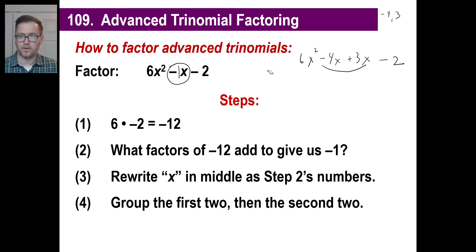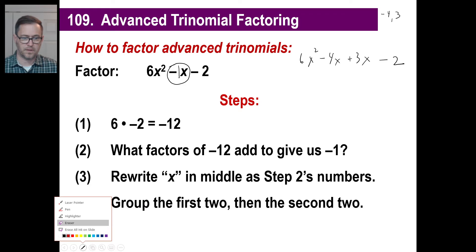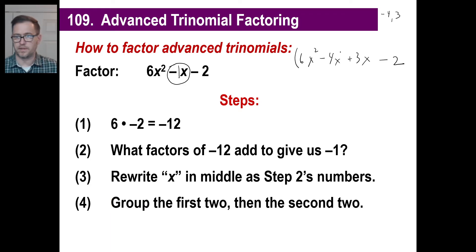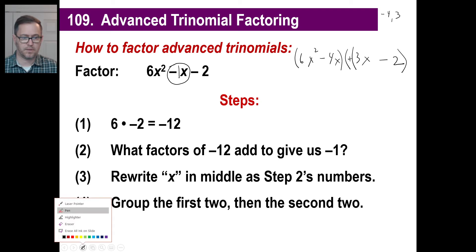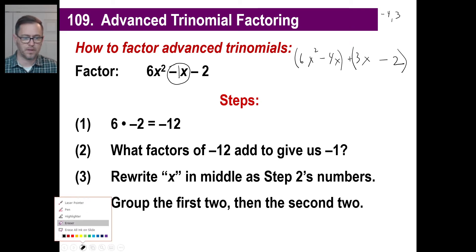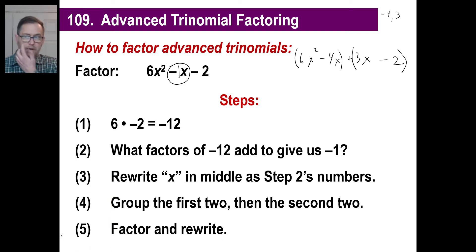Step four: group the first two terms and the last two terms together. We clump the first two terms in parentheses and the last two terms in parentheses. You can write the parentheses first — the plus sign between them isn't terribly critical, we just need to know what we're doing. Step five is to factor and rewrite, and you'll see these work out perfectly every time.